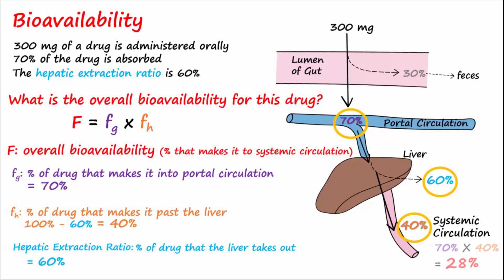Remember that bioavailability is always expressed as a percentage. Using the overall bioavailability, one can find the milligrams that actually make it to systemic circulation. In this case, it would be 28 percent of 300 milligrams, which is 84 milligrams.